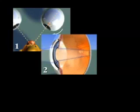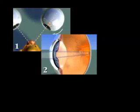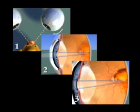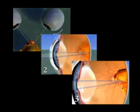Combined, convergence, pupillary constriction, and rounding up of the lens all function to keep an object in focus as it approaches the eye.